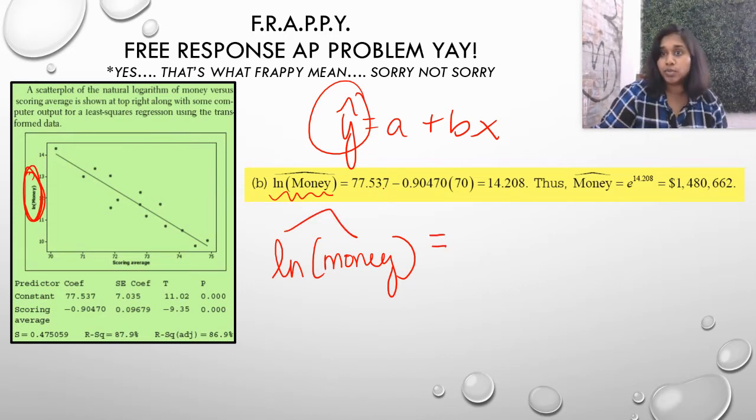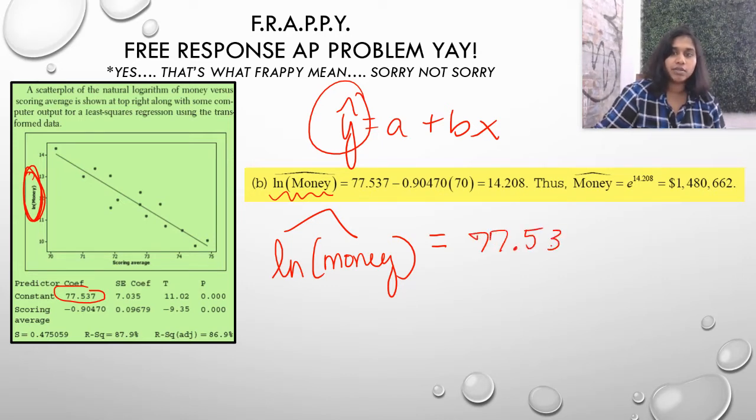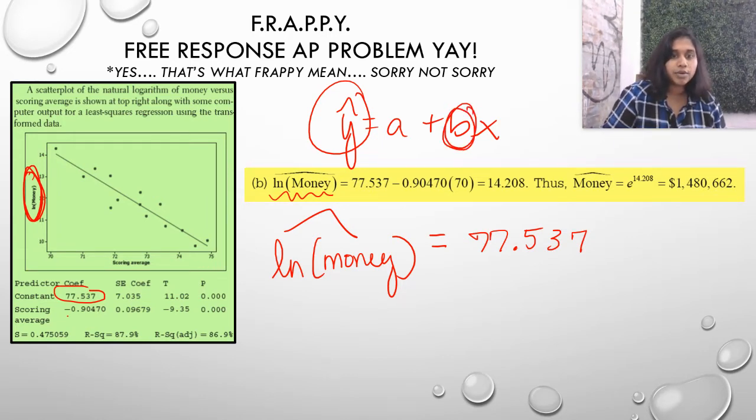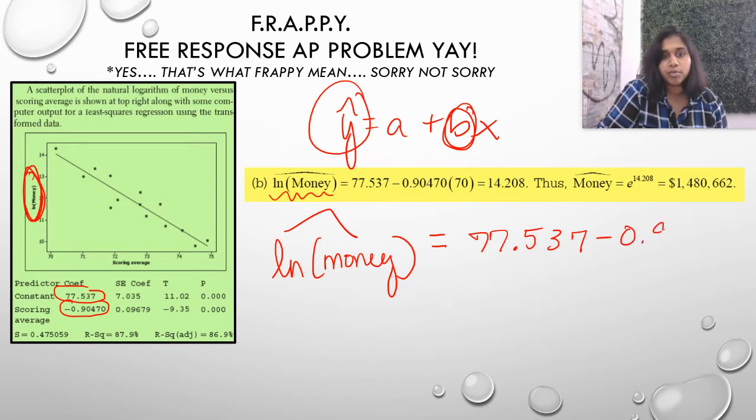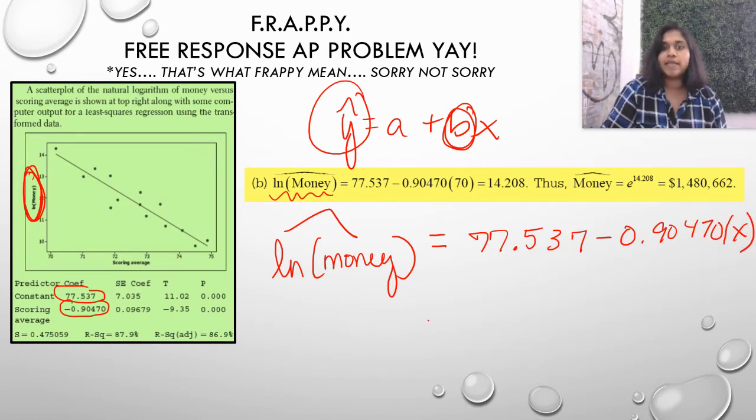What is my a value? That's the y-intercept, occurring at my constant coefficient, 77.547, and then we've got our slope value occurring right here, the scoring average coefficient. If you're struggling with just reading mini tabs, I've posted links about the mini tab before. You can also Google it. The hardest thing is just remembering which parts are provided in which spots. Negative 0.90470, and then x, and that would be our formula.